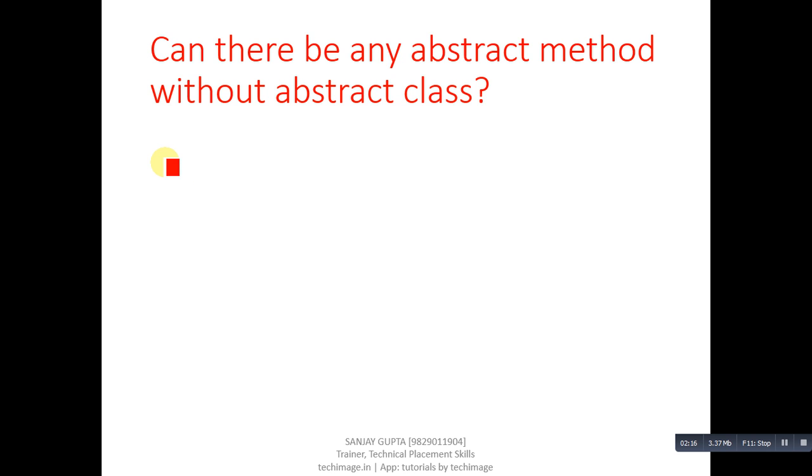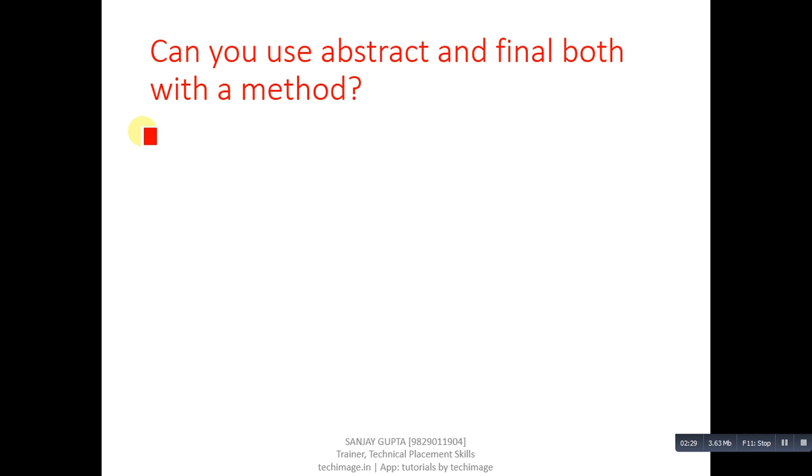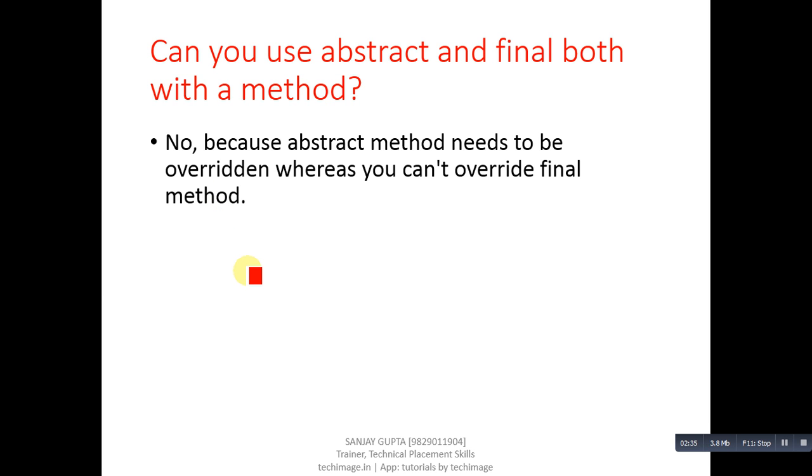Next question, can there be any abstract method without abstract class? Answer is no. If there is any abstract method in a class, that class must be abstract. Next question, can you use abstract and final both with a method? Answer is no, because abstract method needs to be overridden whereas you can't override final method.